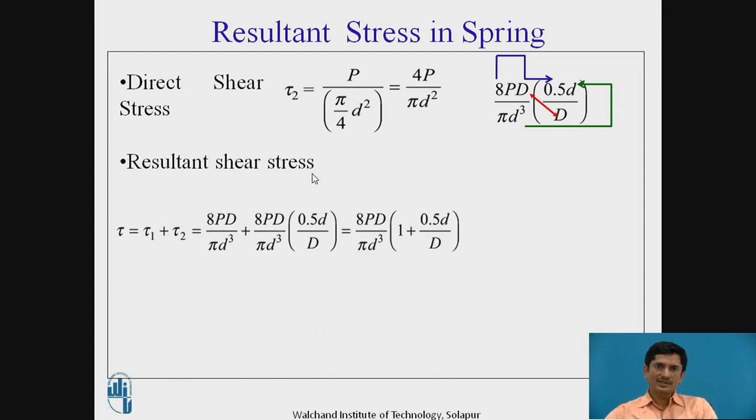The resultant shear stress. If I add these two stresses, torsional shear stress and direct shear stress, first term is torsional shear stress, second is the direct shear stress. I can get the common term 8PD upon pi d cubed and in the bracket what remains is 1 plus 0.5 d by D.